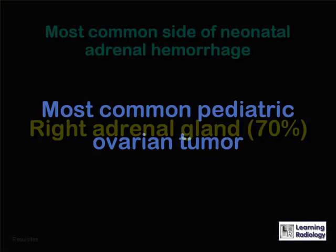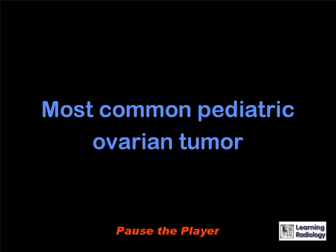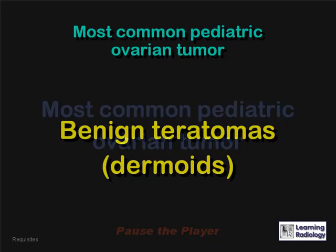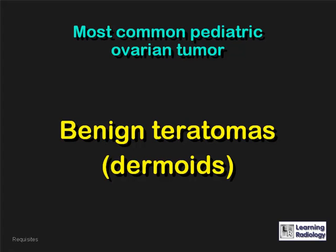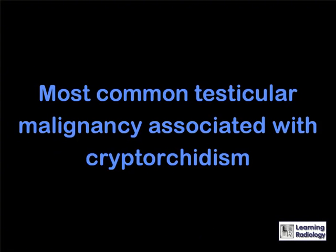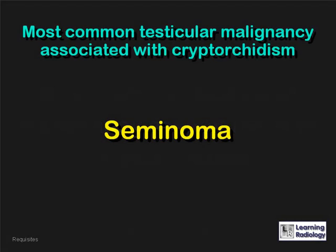What is the most common pediatric ovarian tumor? Benign teratomas, dermoids. What is the most common testicular malignancy associated with cryptorchidism? A seminoma.